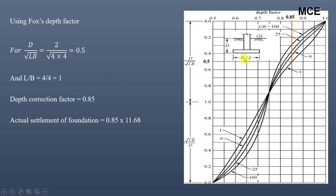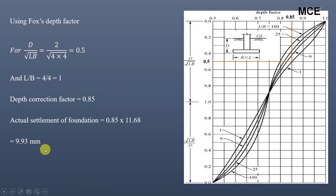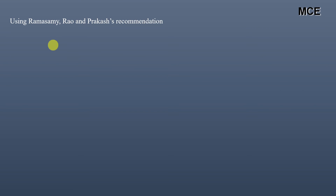The actual settlement of the foundation is the surface settlement multiplied by the depth correction factor: 11.68 mm × 0.85 = 9.93 mm. This is the actual settlement of the foundation corresponding to a load intensity of 125 kPa, using the Fox depth correction factor.